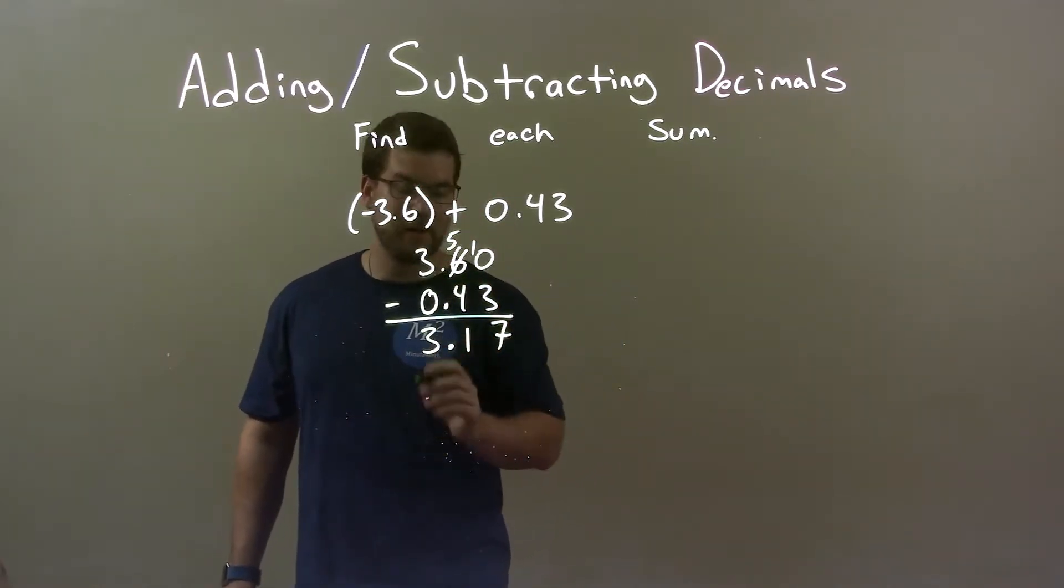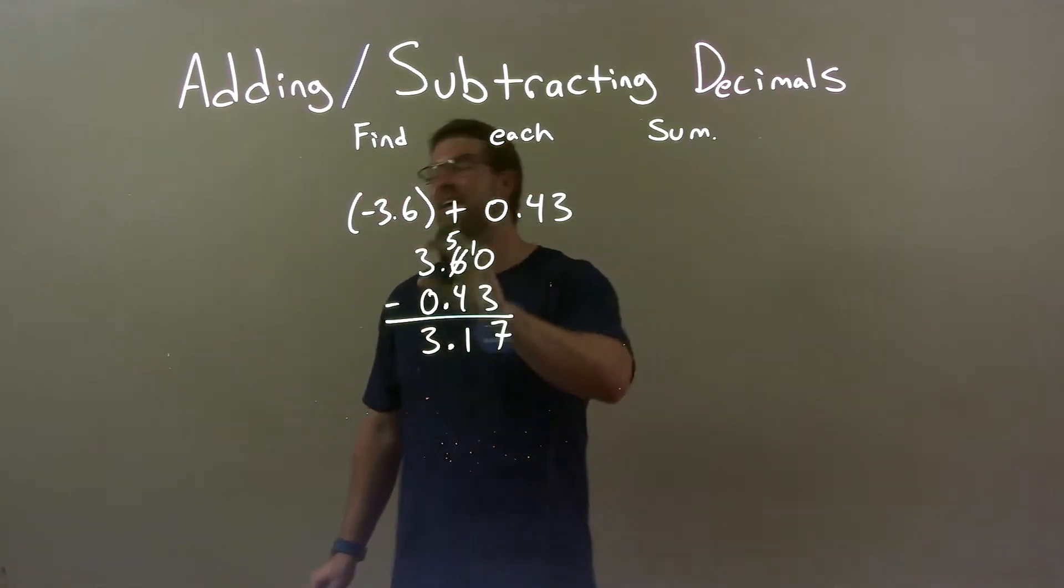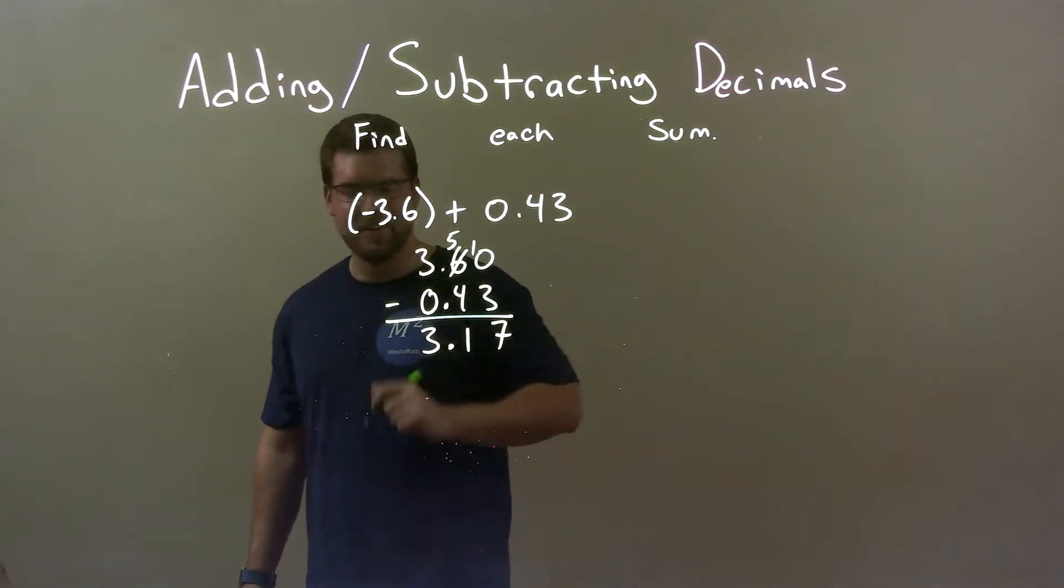3 minus 3 is 3, not 0, 3. Oh sorry, 3 minus 0 is 3, kind of messed up there.